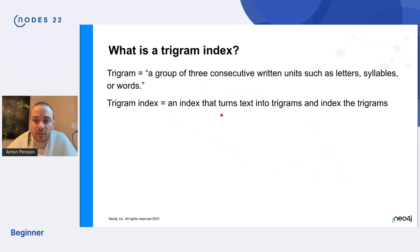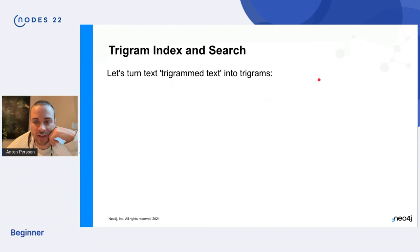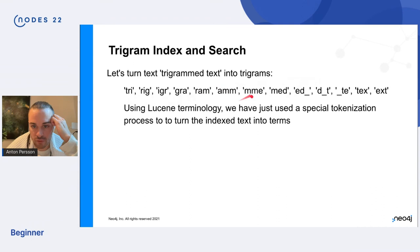And a trigram index is something that turns the text into all of its trigrams and index the trigrams. So if we have this text, trigram text, and we turn it into trigrams, we will have all of those groups of letters. All of those will be terms in Lucene. All of them will point to the same document.